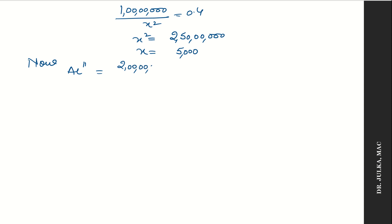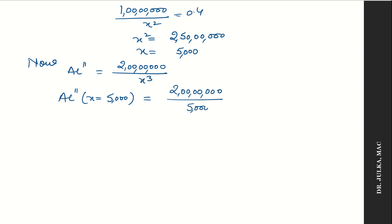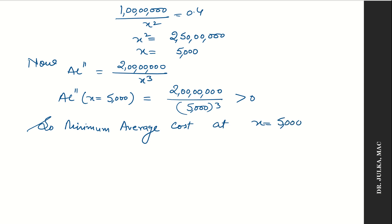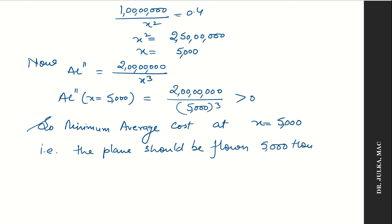The second derivative is 2 crore/X³. At X = 5000, the second derivative equals 2 crore / (5000)³, which is positive. Therefore, the minimum average cost occurs at X = 5000 hours. This means the plane should be flown 5000 hours before replacement, or equivalently, the plane will be replaced after 5000 flight hours.